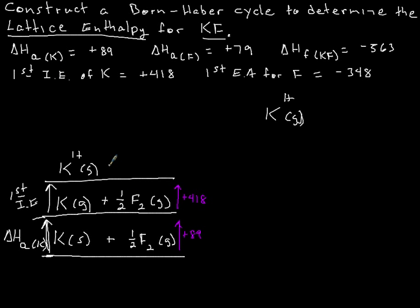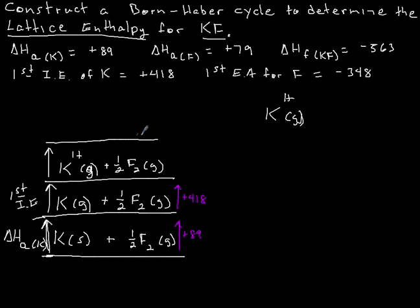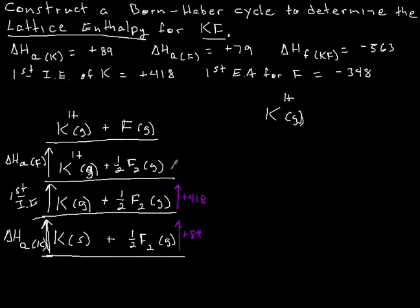The potassium is now what we need it to be — in the gas phase and charged. We have the gaseous ion of potassium, which is what we need for lattice enthalpy. Now we need to work on the fluorine, so we're going to atomize it. To atomize something means you make it an individual atom in the gas state. The ½F₂ becomes simply F in the gas state. This is the enthalpy of atomization for fluorine, which is +79 kilojoules per mole.